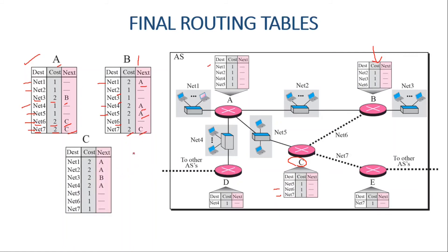For router C, networks five, six, and seven already existed initially. Networks one, two, and four were added when router A sent its routing table to C — costs were incremented by one to become two, and next hop was set as A. Network three was added when router B sent its routing table to C — cost was incremented by one and next hop was set as B. You can now figure out the final routing tables of D and E on your own.